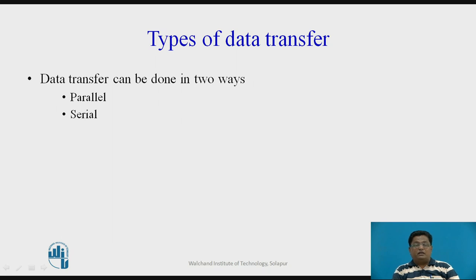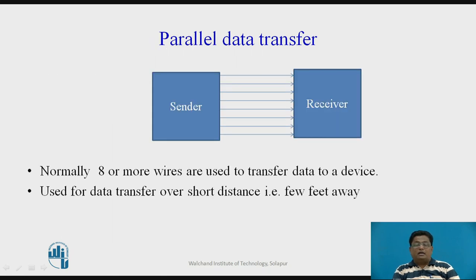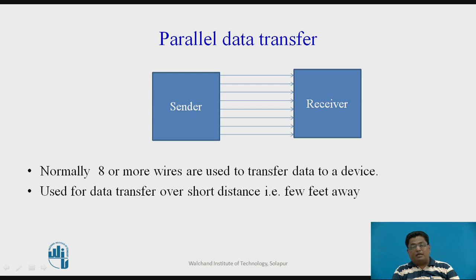Another classification of data transfer concerns how the data is transferred. The first type is called parallel data transfer, and the second is serial data transfer. In parallel data transfer, multiple wires are drawn between the transmitter and receiver — typically eight or more wires in a controller-based system. Parallel data transfer is used for short distances, just a few feet away, because it requires more lines.